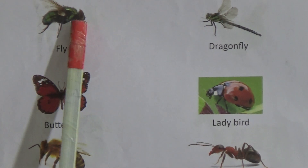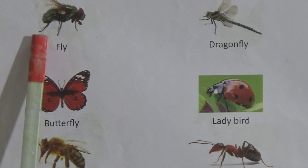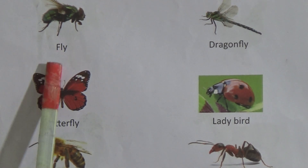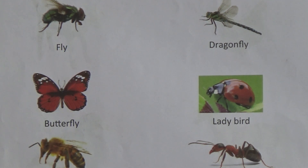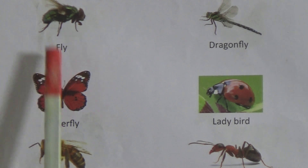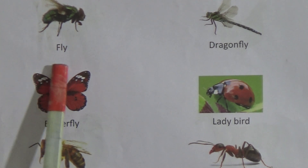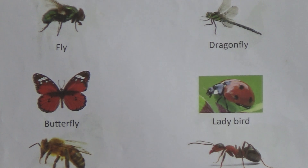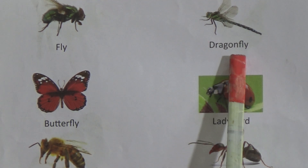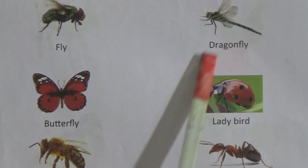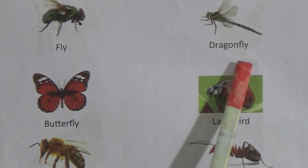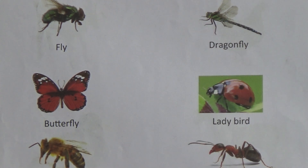First one here is fly. This insect name is fly and the spelling is F-L-Y, fly. Next one here is dragonfly. This one is dragonfly and the spelling of dragonfly is D-R-A-G-O-N-F-L-Y, dragonfly.